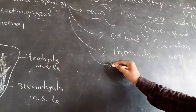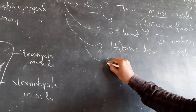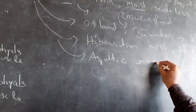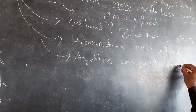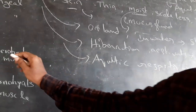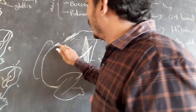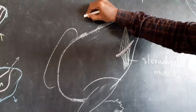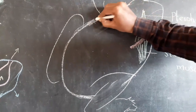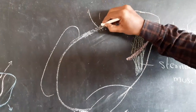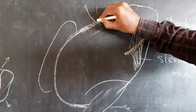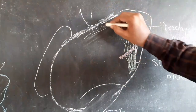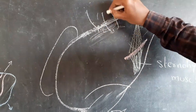So skin acts as an aquatic respiratory organ in frogs. Atmospheric gases dissolve in the mucous membrane and then diffuse into the capillaries of the skin. So skin allows the gases through.